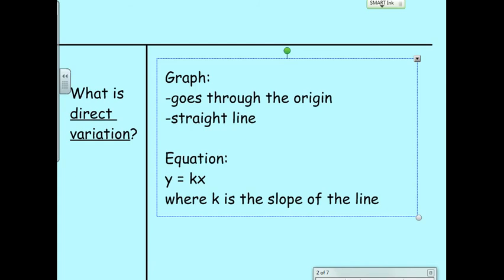Well, direct variation graphs always go through the origin. They form straight lines, so they're linear. And what this will look like as an equation is y equals a number times x, usually in direct variation we refer to that number generally as k, but it's the slope of the line, so some people refer to it as m. So again, it's going right through 0-0, the origin of the graph, it's a straight line, and the equation looks like this.